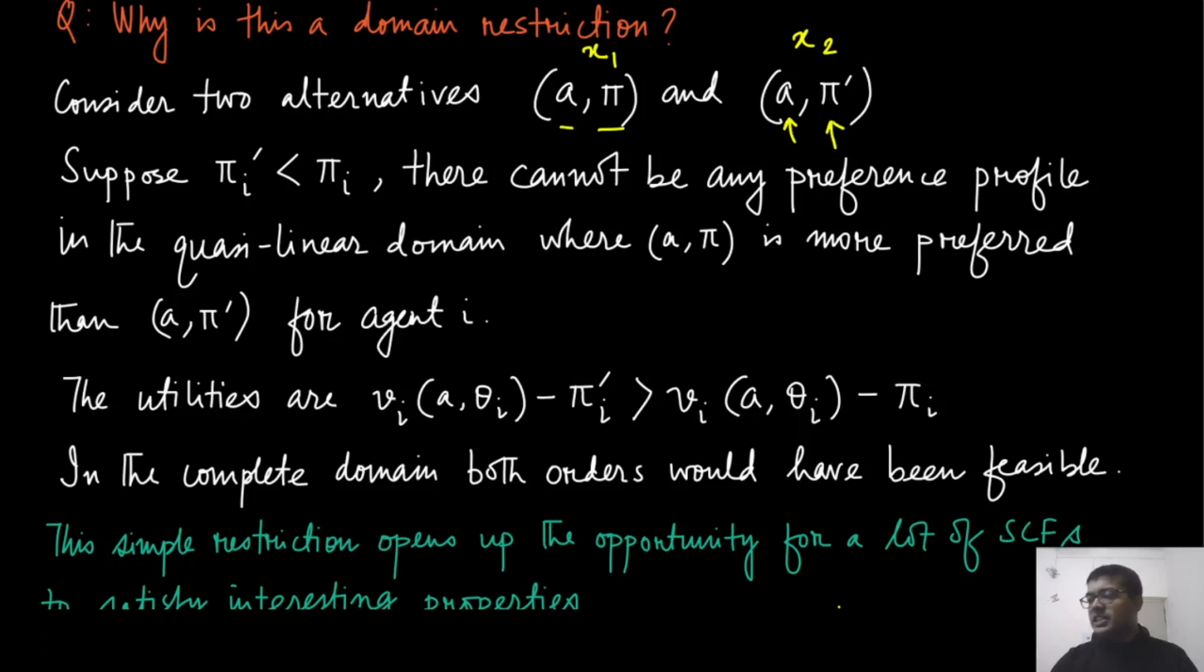Now, let us also assume that pi_i prime, that is the payment for player i in this prime, is actually smaller than the payment in the original pi vector. In the unrestricted domain, we have assumed that every player, in particular even for player i, x_1 can come above x_2 or x_2 can come above x_1. Both are admissible things.